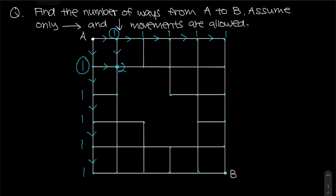We do the same whenever we see two arrows. Going downwards: two plus one is three, three plus one is four, four plus one is five, and going downwards again that gives six.